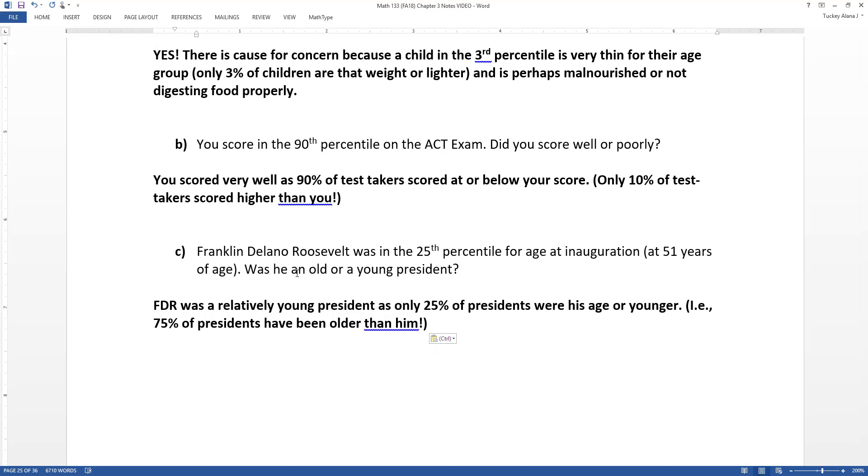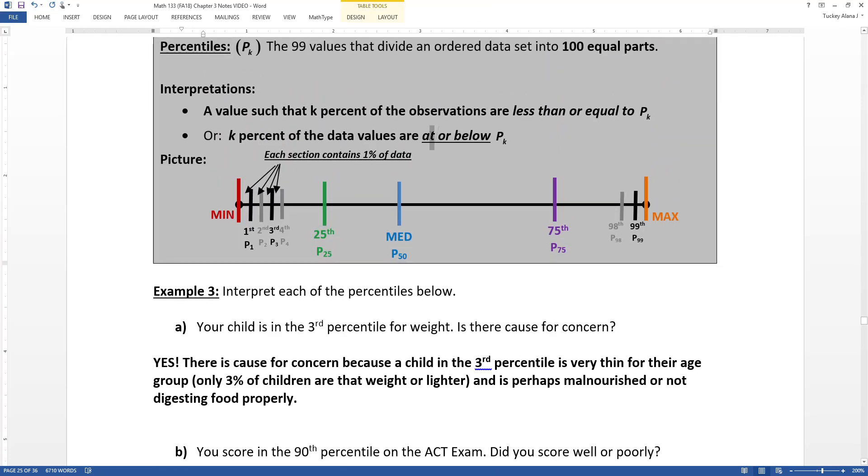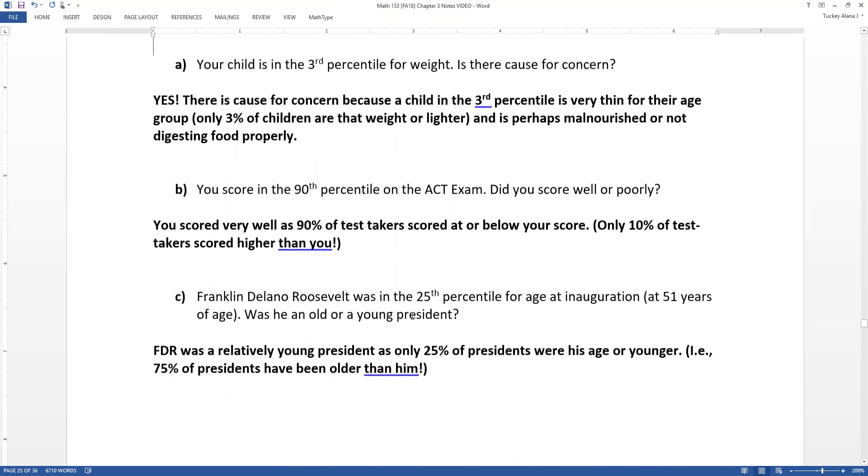Z-score does everything based off of the mean and the standard deviation. This isn't looking at that. This is looking at the percentage of the group. What percentage of the group are at or below your score? And don't forget the at part. A lot of students do. But it's at or below your value, or the percentile value.